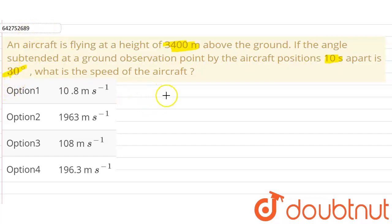In the given question, we have been given that an aircraft is flying at a height of 3400 meters. So let us suppose that this is our aircraft which is flying at a height of 3400 meters.